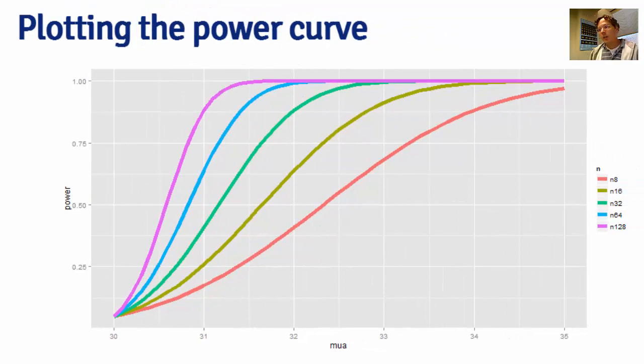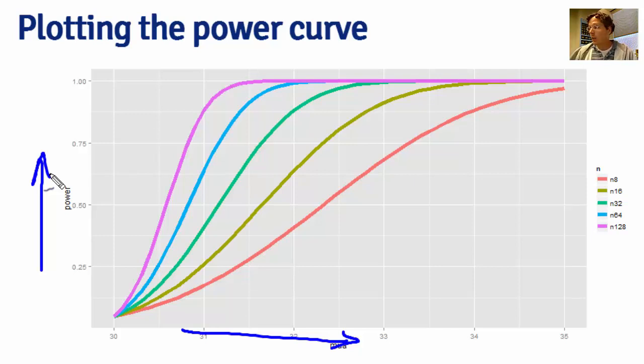So here I'm plotting the power curves, which is the power as a function of mu-a, as n varies by color here, and as we head to the right on this plot, so as we head along this axis, that's mu-a getting bigger, and this axis is power. So let's take a specific one of these lines and look at it. So this line right here is the power when n equals 8. And what you can see is all of the lines, including this one that we're discussing right now, converge at 0.05 as mu approaches 30.